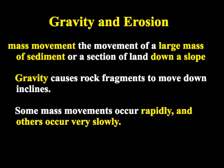One of the major agents of erosion is gravity, which can play a big role. When we look at a mass movement of weathered rock moving down a slope or down a mountainside, we call that mass weathering.